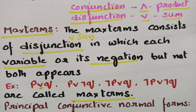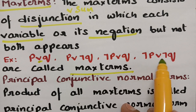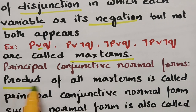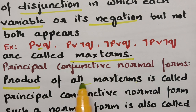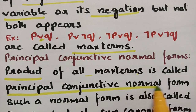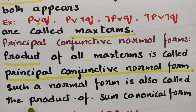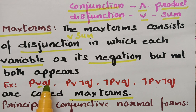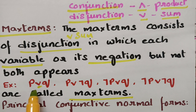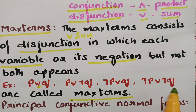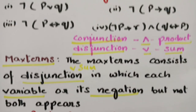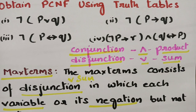According to the Principal Conjunctive Normal Form, if these max terms are multiplied together, we say it is a PCNF — that is, the product of all max terms. Such a normal form is also called the product of sums canonical form. Max terms are the disjunction between a variable or its negation. If you multiply all these max terms, you get the Principal Conjunctive Normal Form.